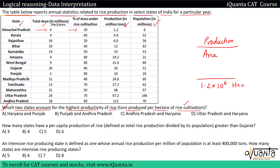We also need the production in tons. Rice produced in Himachal Pradesh is 1.2 million tons, which is 1.2 × 10⁶ tons. One ton is 1000 kg. When you solve this, the 1.2 × 10⁶ cancels in both numerator and denominator, giving one ton per hectare for Himachal Pradesh.